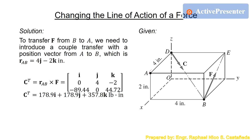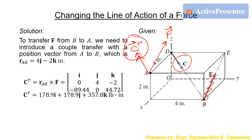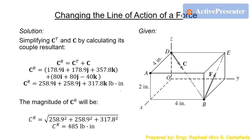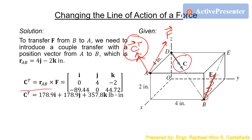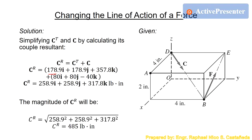We now have the force and the couple transfer, but this is not yet an equivalent force couple system because the two couples are not simplified. We need to add them together by simply adding their components — the components of the original couple C and the components of CT — to get the resultant couple CR. If you want the magnitude of CR, apply the magnitude formula using the components of the couple resultant.